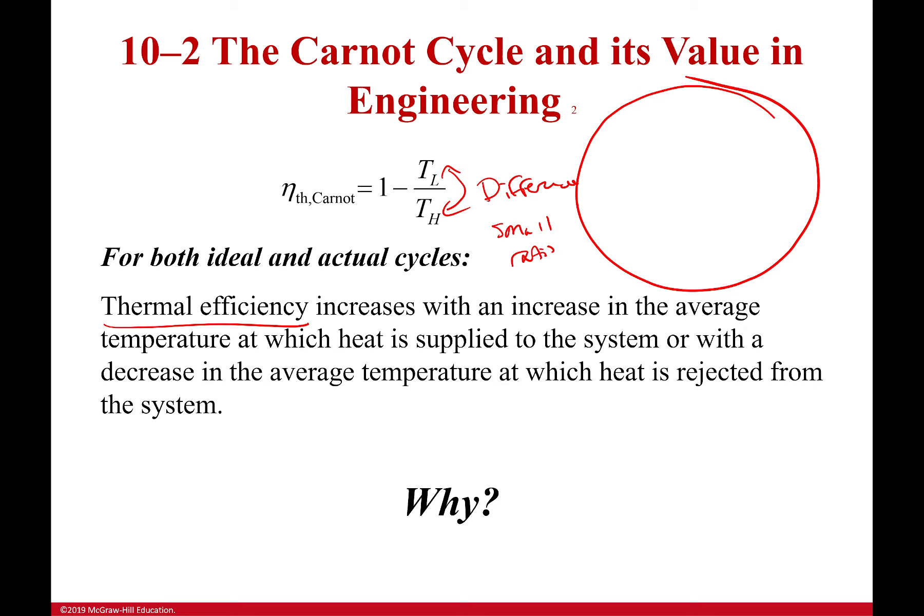T_low then is simply saying what fraction of that energy do I have to reject? Because I have to reject some energy at the end. I'm rejecting at the same temperature as whatever my T_low is. So the smaller my T_low is, the smaller portion of my energy I'm wasting because that is wasted.